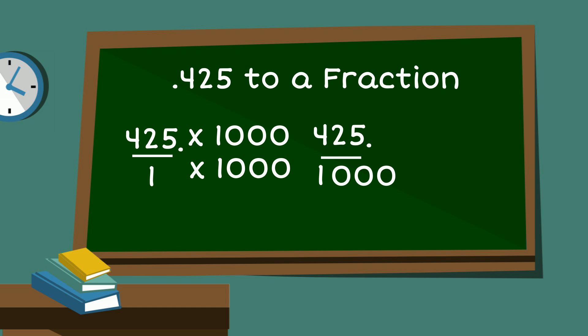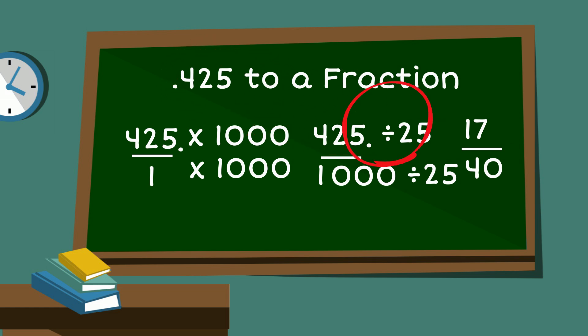We can simplify this. Let's divide both of these by 25. When we divide 425 by 25, that gives us 17. 1,000 divided by 25 is 40. 17 is a prime number, so we cannot reduce any further. I hope that helped.